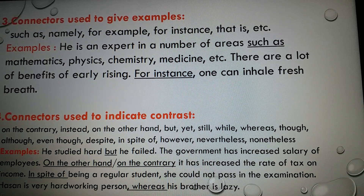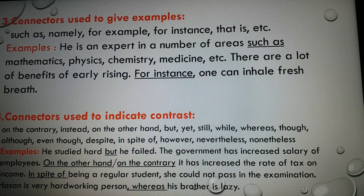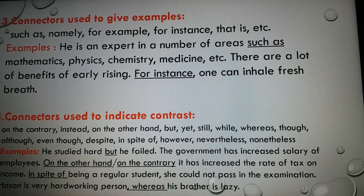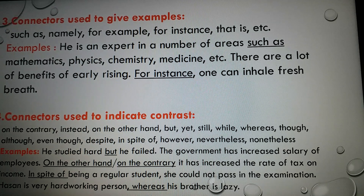Number three: there are some connectors in English used to give examples, like: such as, namely, for example, for instance, that is, etc. Examples in text: 'He is an expert in a number of areas such as mathematics, physics, chemistry, and medicine.' 'There are a lot of benefits of early rising; for instance, one can inhale fresh air.'